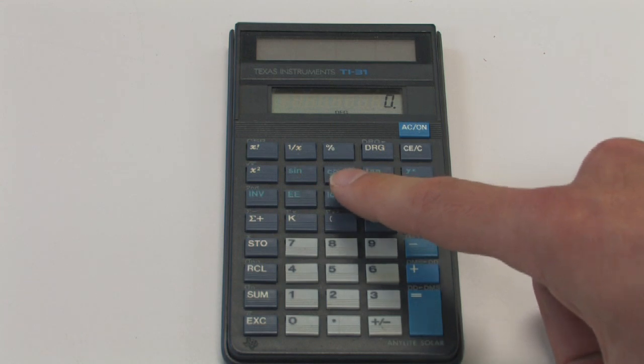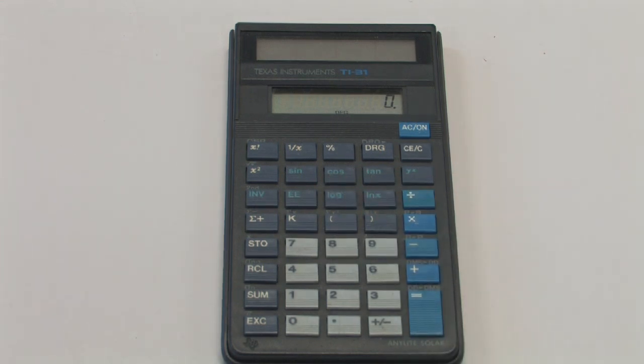For the inverse cosine, the domain is negative 1 to 1, and the range is from 0 to π.